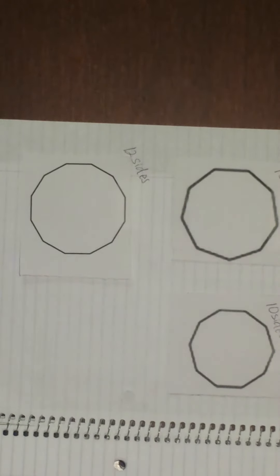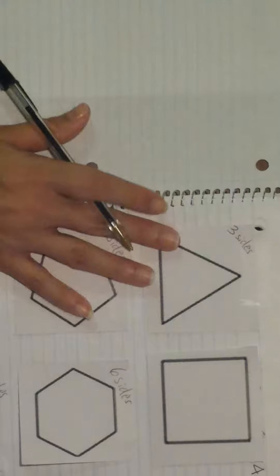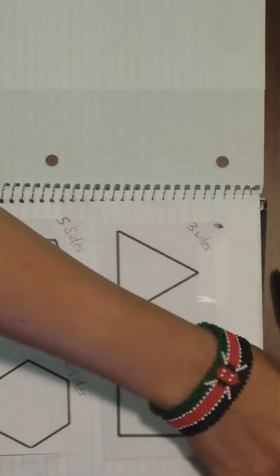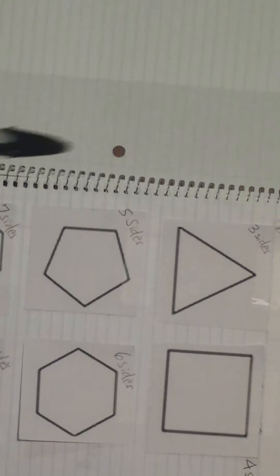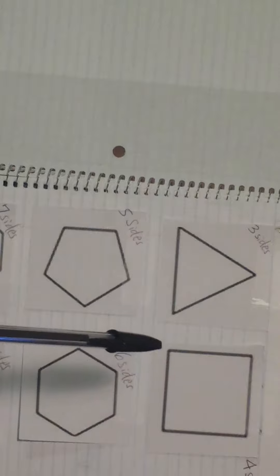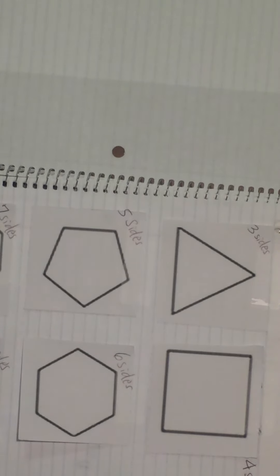Now we're going to watch a quick video. You should already know what these shapes are called, but we're going to watch a quick video to show us what they are. As you're watching this video, I want you to go ahead and write in what three sides is called. You all know what three sides is, and what four sides is called. The video is going to let us know what the names of these sides are.